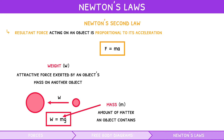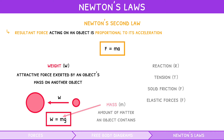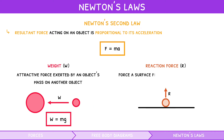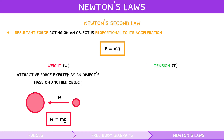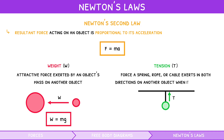The other main forces encountered in IB Physics mechanics are the reaction, tension, solid friction and elastic forces. Remember that the reaction force is the force a surface perpendicularly exerts on an object due to its weight. As a result, on any flat surface, reaction force is always equal and opposite to the weight of the object. Tension acts very similarly — since it is the force of a spring, rope or cable exerting in both directions on another object when it is stretched, a rope suspending an object has a tension equal and opposite to the object's weight.